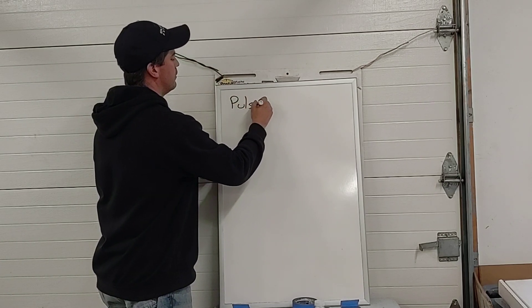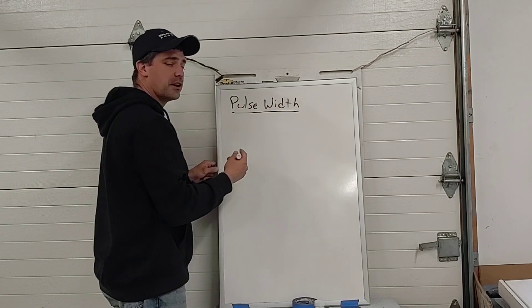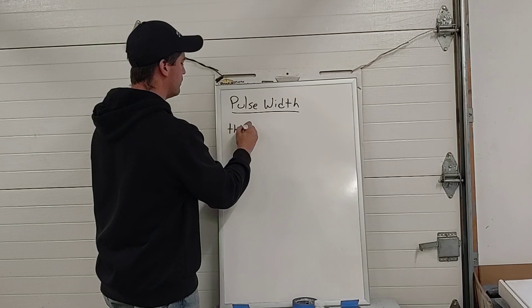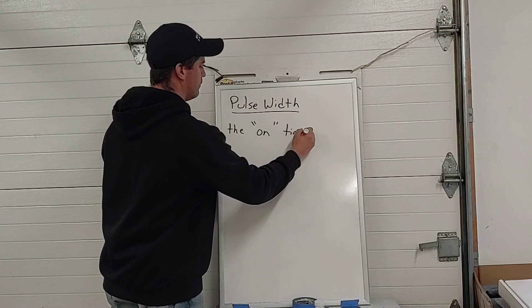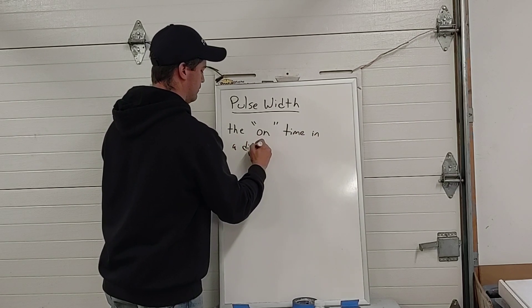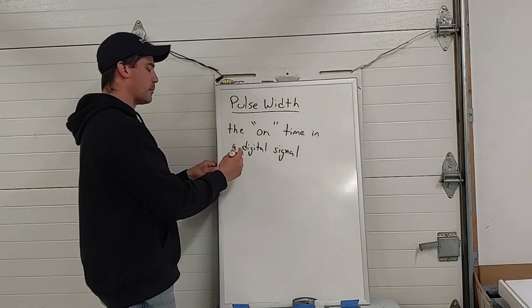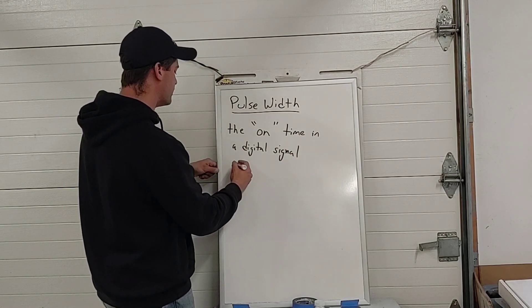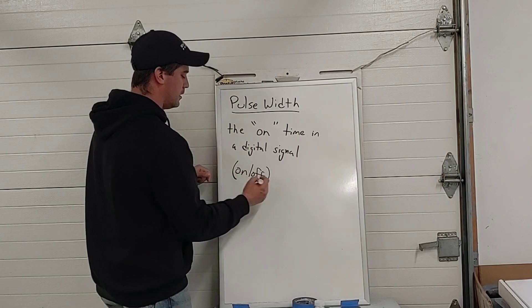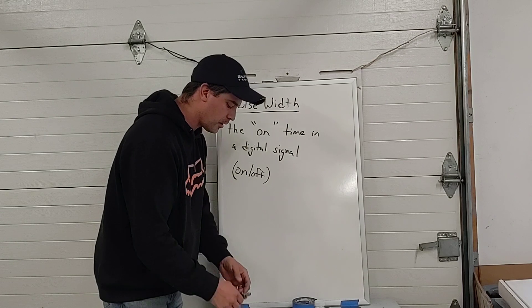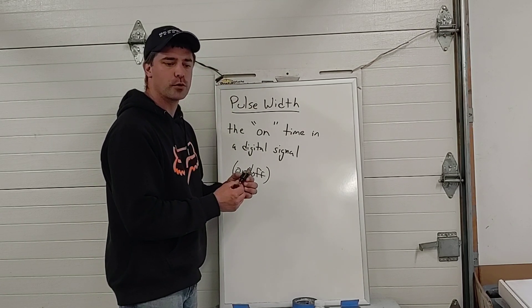Pulse width is a fancy way of saying the on time in a digital signal. If you remember back to previous lessons, you know that digital signals mean on and off. By nature, fuel injectors are turned on and off. They can't really be partially opened or partially closed like a faucet. They're either spraying fuel or they're not.